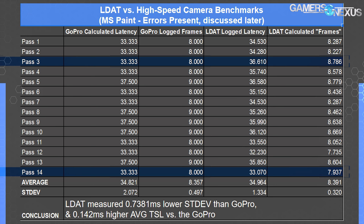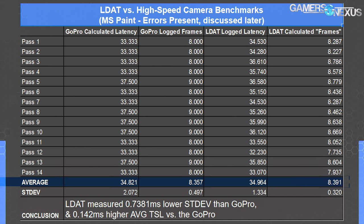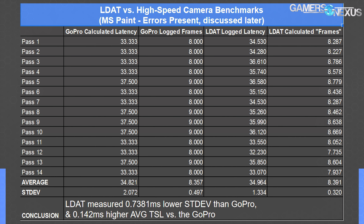By dividing the LDAT's reported latencies by 4.2, we can calculate the number of GoPro frames that the LDAT estimates should have passed. In 11 of 14 cases, the LDAT and the GoPro agree with one another, and they never differ by more than one single frame — an excellent score given the up-to-one-frame margin of error inherent to the GoPro. The GoPro method yielded an average latency of 34.82 milliseconds for this test, while LDAT yielded 34.96. Our old-school GoPro method is thus far completely adequate for determining end-to-end system latency, and LDAT isn't producing some number we don't understand. These numbers are functionally equivalent, and our old method would produce results perfectly usable for the audience.